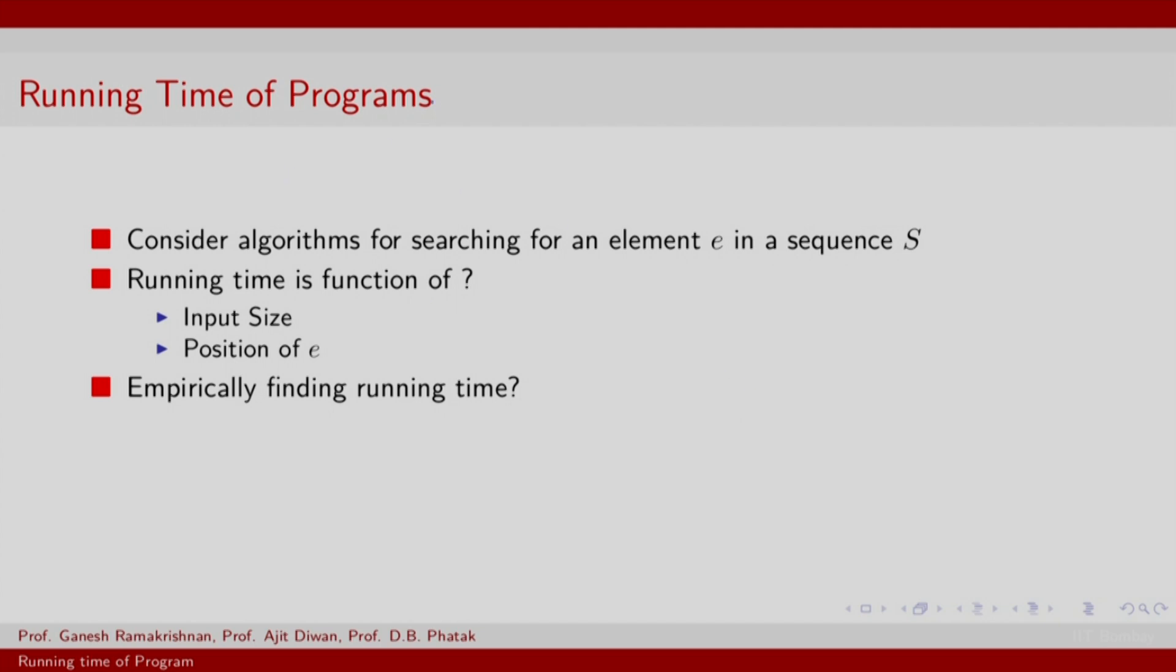Let us take a canonical example and that of search. We will illustrate through the canonical example of searching element e in an array s. Now, e could be anywhere in this. We will make an assumption that s is sorted and we will assume that the sorting is based on the key value of the elements. The running time will really depend on how long the sequence s is. Also, the running time could depend on the position of the element. How do you characterize this running time as a function of input size and the position of the element?